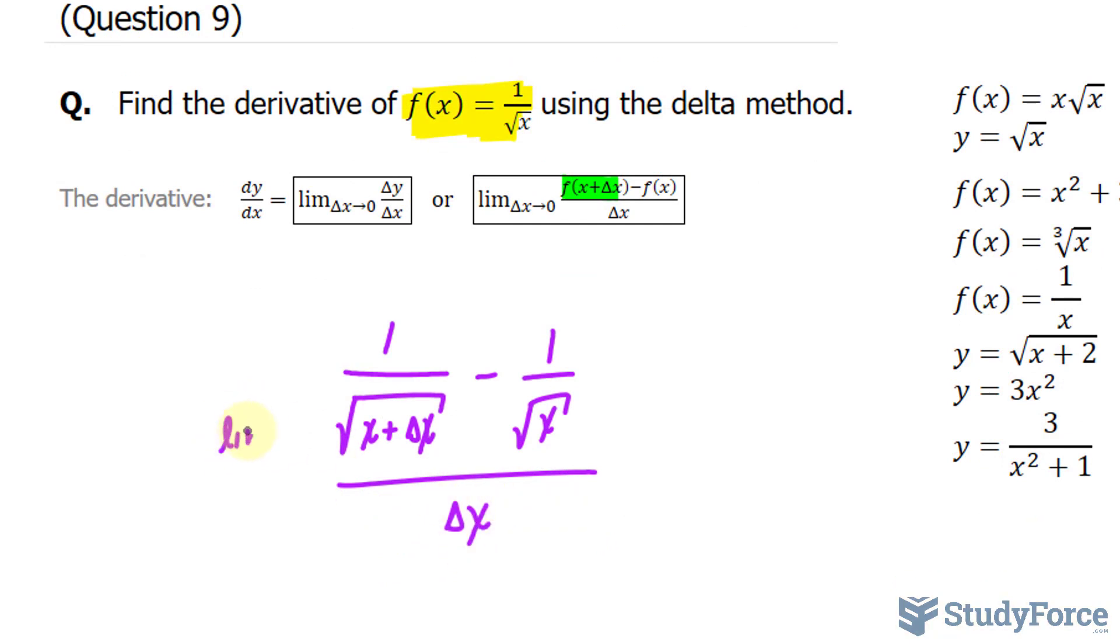And we need to take the limit as delta x approaches 0. Of course, if I were to substitute 0 into delta x, I would end up with over 0, and that's an error. We can't do that. We need to manipulate this a little further.